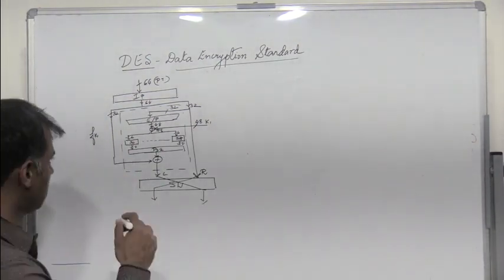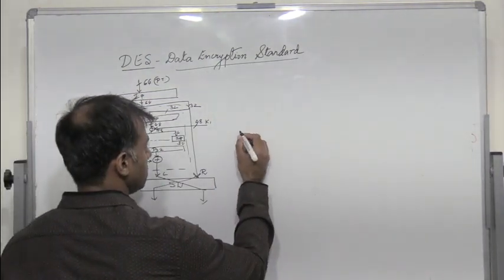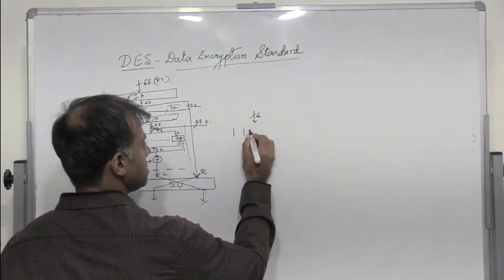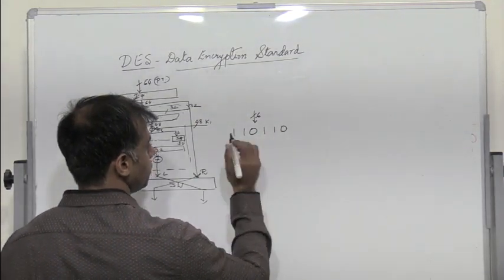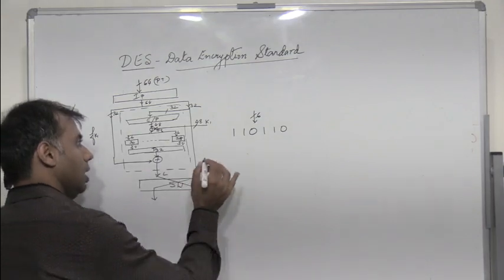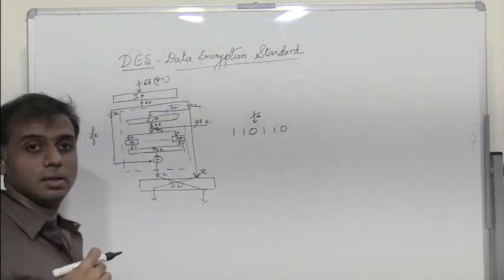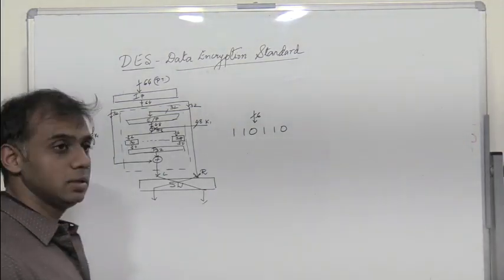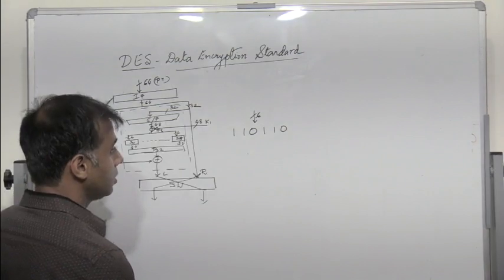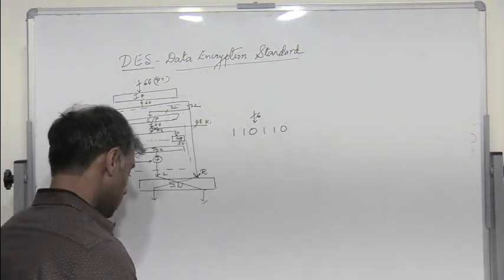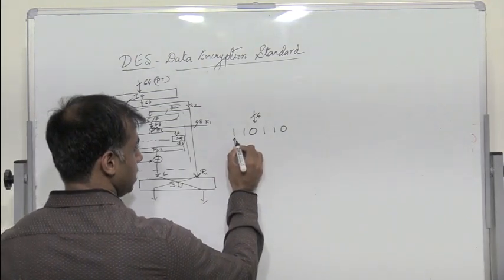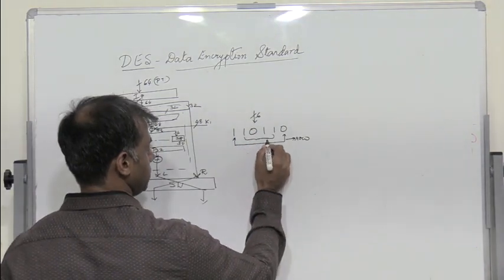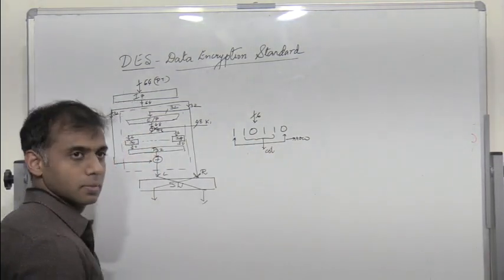Now let's see how these S-boxes are. You have a 6-bit input. Let's assume that this is the input to one of the S-boxes. We observed in SDES that the first and the last bit indicated the row, whereas the middle 2 bits indicated the column operation. Even here, this is almost the same. The first and the last bit will indicate the row, whereas the middle 4 bits will indicate the column.